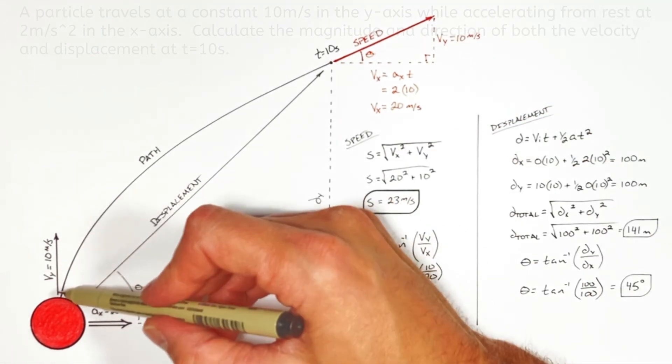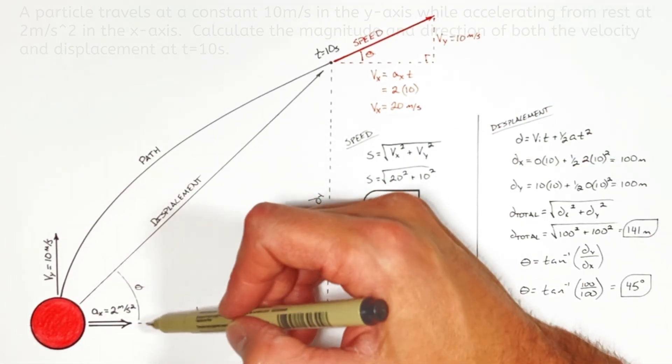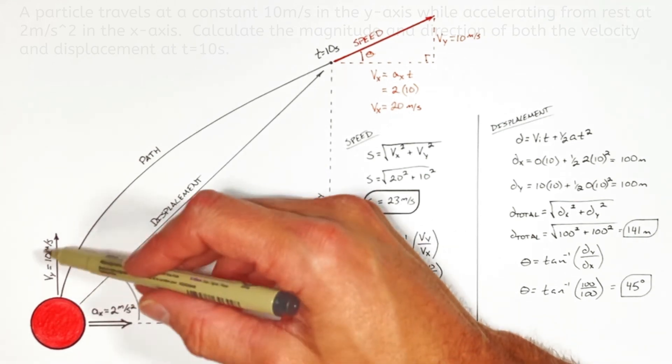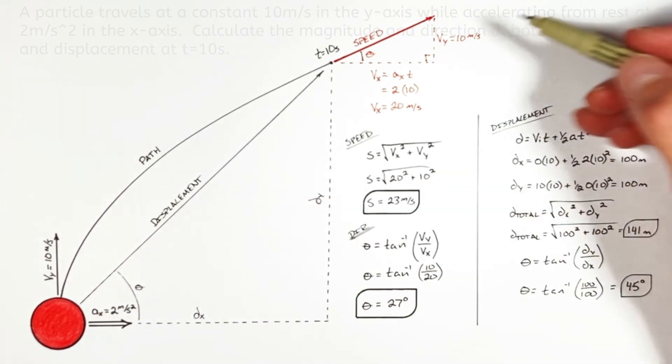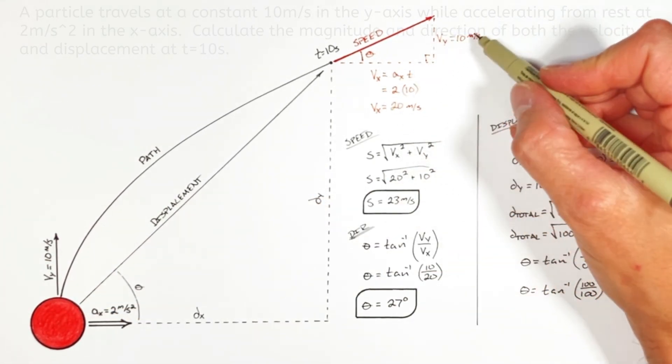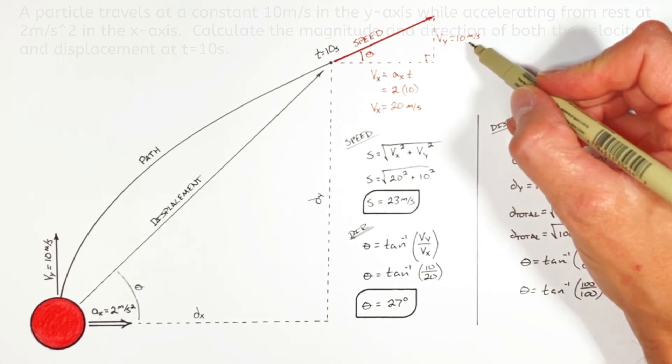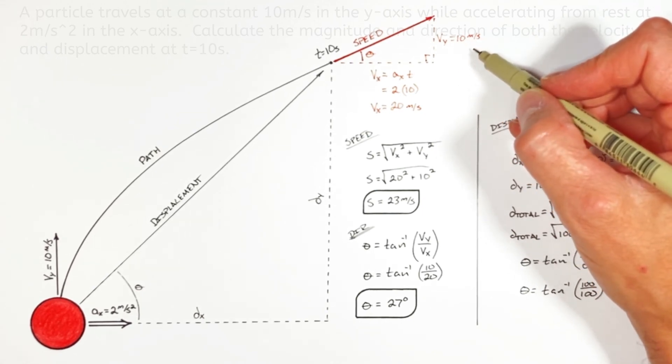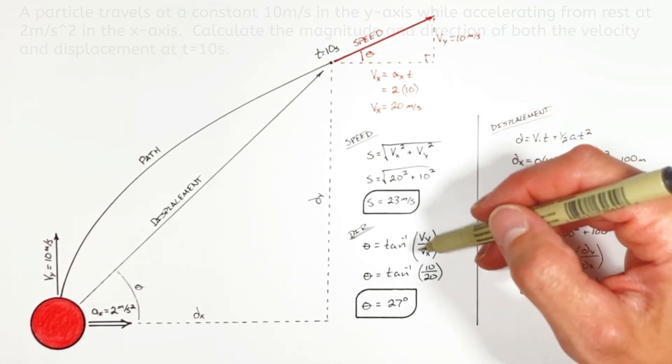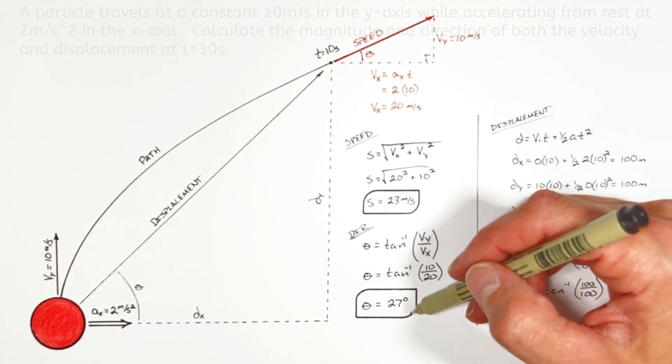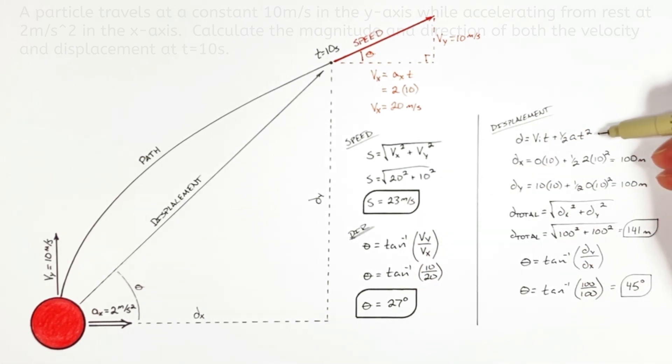Now in this particular problem we had the ball moving at a constant speed in one axis and accelerating in the other. But realize even if I'd had this accelerate in both axes all that would have done was just changed how we came up with the velocity right here at this point in time. We still would have used the Pythagorean theorem and tangent to come up with the speed and direction. And we still would have used the same equation in order to come up with the displacements.